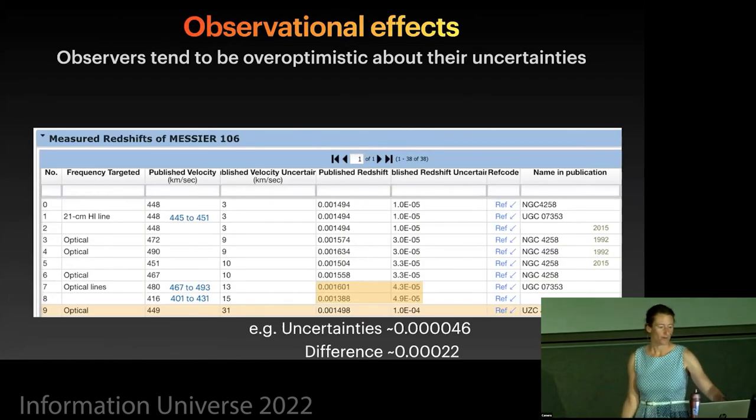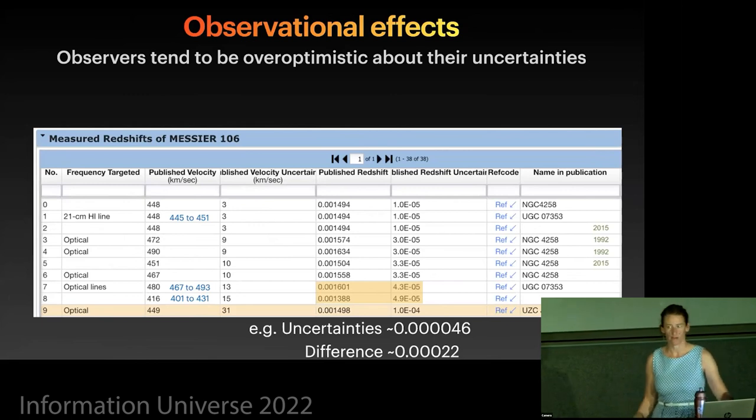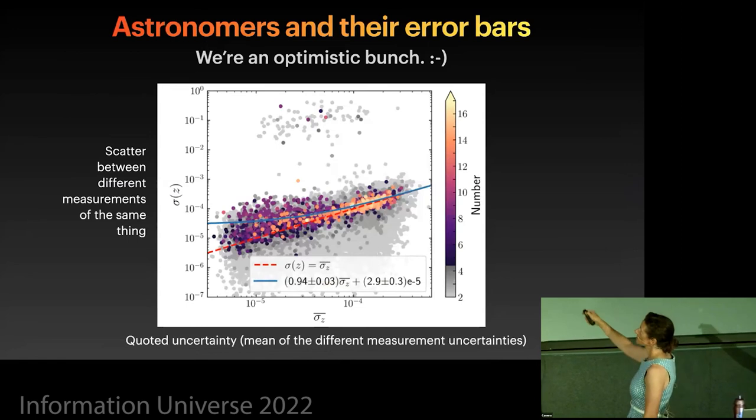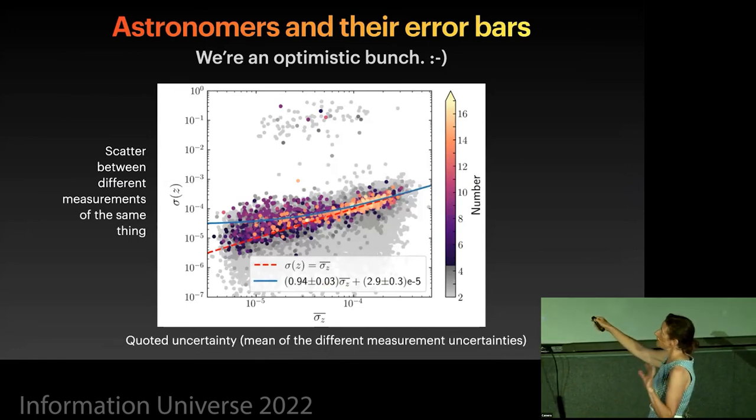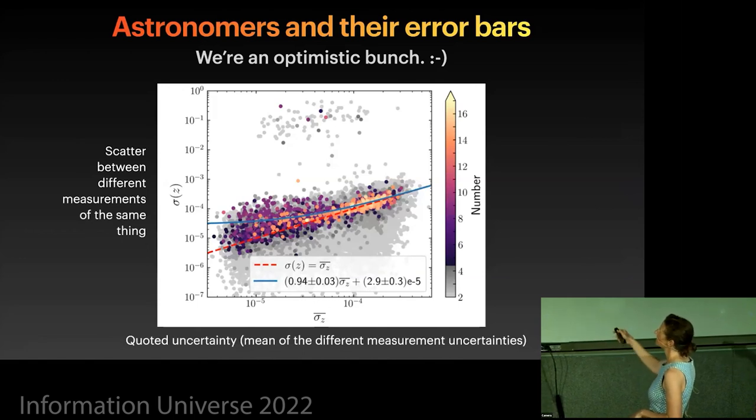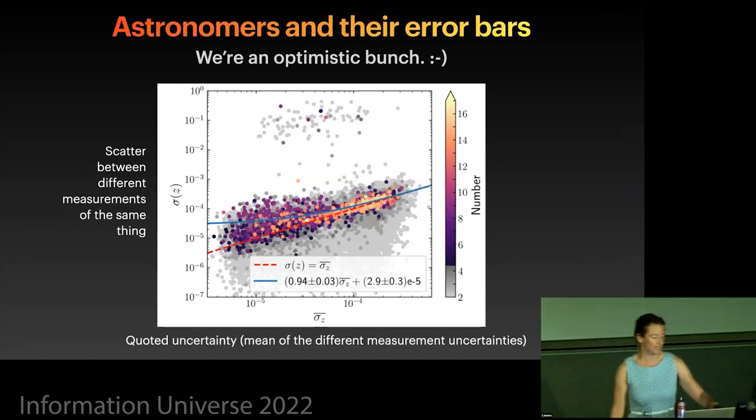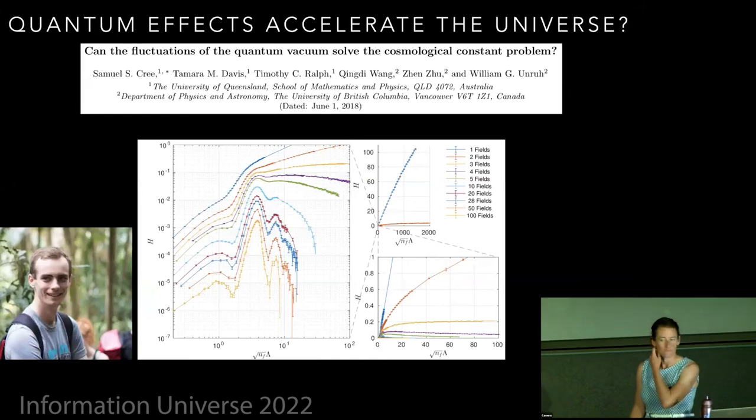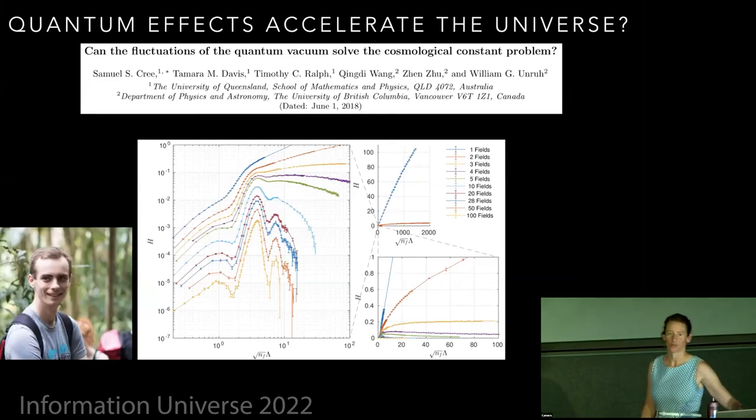So I thought I'd quickly, because it's this conference, I just want to flash up to two papers from different students of mine that you might be interested in, and we can talk about in the break. One was one we did by Sam Cree, spectacular student. We did this with Bill Unruh's group, asking whether quantum effects can accelerate the universe. And another fun one that we did recently and put in the Gravity Research Foundation essay competition was Leo Giannani's one asking whether there's an intrinsic spin to galaxies.